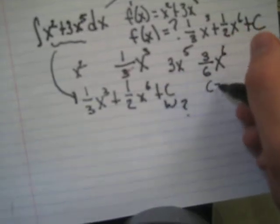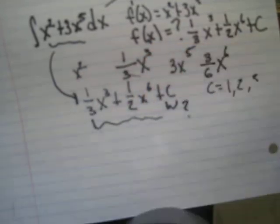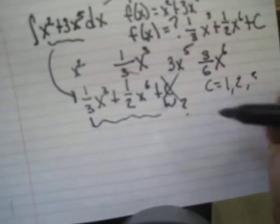When you take the derivative, c could be 1, 2, 3. Because remember, when you take the derivative of the function, c gets dropped off.